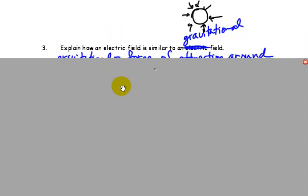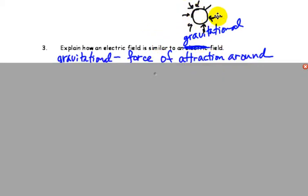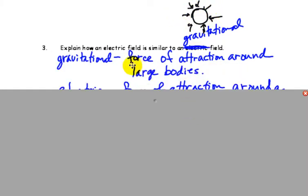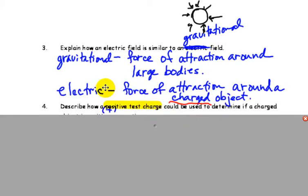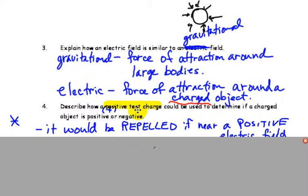If we look at, the next thing we look at here is electric fields, which are very similar to gravitational fields. So, if you think of a gravitational field, an object such as the earth exerts a downward force on objects that are nearby. Gravitation, force of attraction around large bodies. Electric field, a force of attraction around a charged object, such as a positive charge.